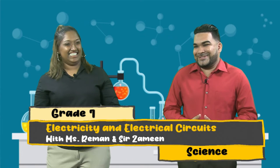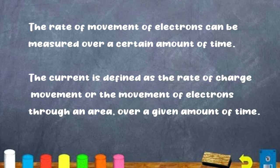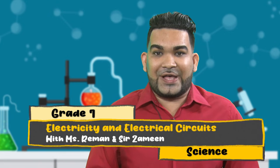Nice. So, boys and girls, the rate of movement of electrons can be measured over a certain amount of time. The current is defined as the rate of charge movement or the movement of electrons through an area over a given amount of time. Now, boys and girls, I'm sure that you could have recalled in our previous lesson that we looked at charges.